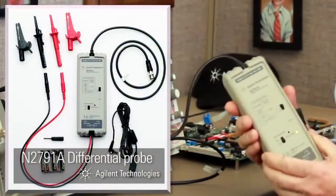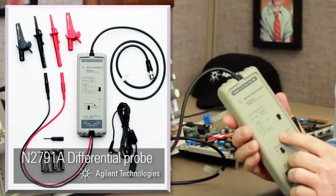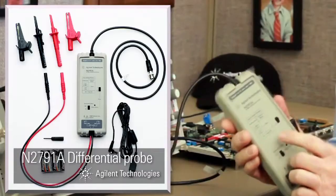The first step is to probe the differential CAN bus. Agilent recommends using the N2791A 25 MHz differential active probe. Let's begin.